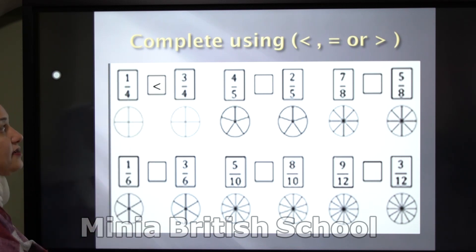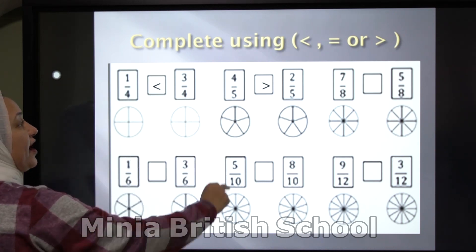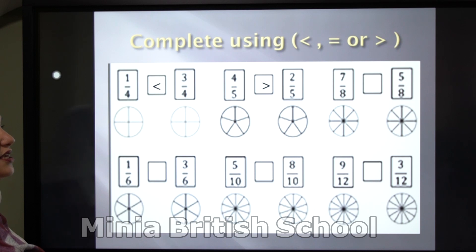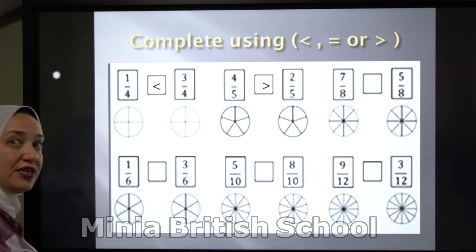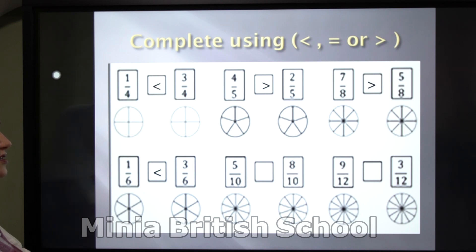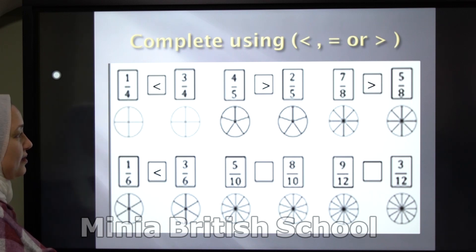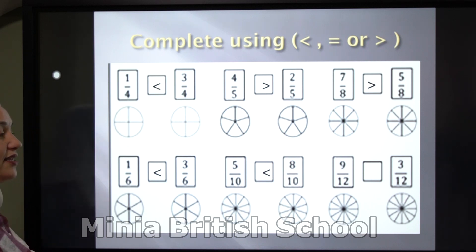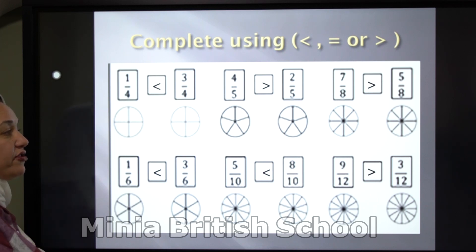This comparison is called smaller than. Second: 4 over 5 is bigger than 2 over 5. Third: 7 over 8 and 5 over 8 — which one is bigger? Yes, 7 over 8 is bigger than 5 over 8, because 7 is greater than 5. Here 1 over 6 and 3 over 6 — 3 over 6 is bigger, so 1 over 6 is smaller than 3 over 6. 5 over 10 is smaller than 8 over 10. And 9 over 12 is greater than 3 over 12.